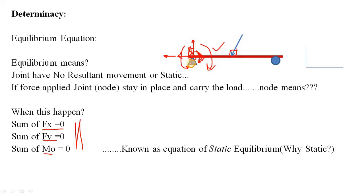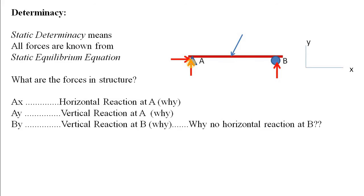Now, what is static determinacy? Determinacy means something that can be determined or derived. We first need to identify the unknowns for a structure under load. For a pin joint, there are two reactions — one horizontal and one vertical. For a roller, there is only a vertical reaction, because a roller can move in the horizontal direction.